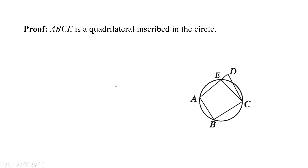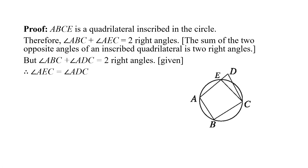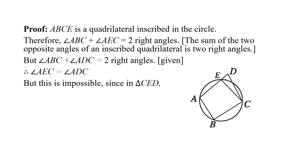Proof. ABCE is a quadrilateral inscribed in the circle. Therefore, angle ABC plus angle AEC equals two right angles, since we know the sum of the two opposite angles of an inscribed quadrilateral is two right angles. But angle ABC plus angle ADC equals two right angles — that is given. Therefore, angle AEC and angle ADC are equal. But this is impossible, since in triangle CED the exterior angle AEC is greater than the opposite interior angle ADC.